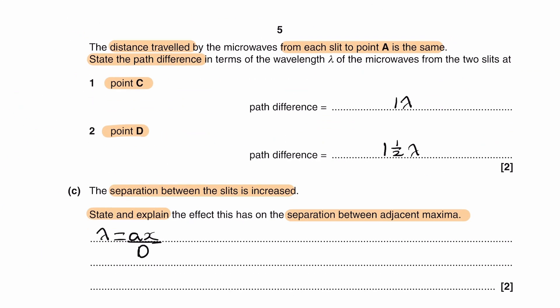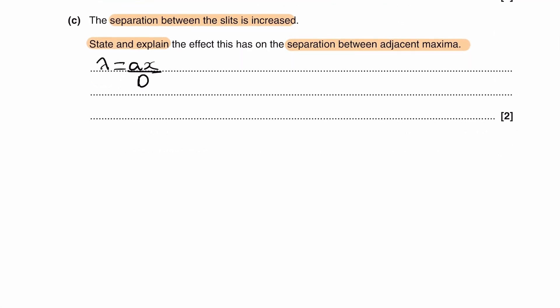So the question is telling us that the separation between slits has increased. So that would mean that A has increased. A gets bigger. And we're trying to state and explain the effects this has on the separation, so X, the separation between adjacent maxima. So if we look at our equation and rearrange for X, X is equal to lambda D over A. And we're not told that lambda and D are changing, so we can assume that both lambda and D are constant. Well if that's the case, well then X is just proportional to 1 over A. And then if A increases, that will therefore mean that the separation between adjacent maxima, X, will decrease. And that will be our answer to Part C.